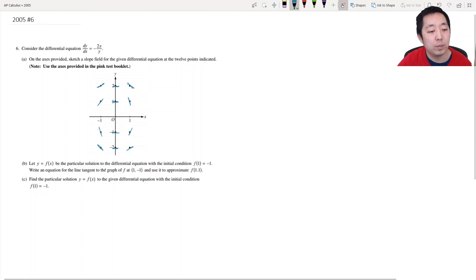Let y equals f of x be the particular solution to the differential equation with the initial condition. Write an equation for the line tangent to the graph and use it to approximate 1.1. Okay so tangent line I always use y minus y0 is equal to m times x minus x0. This is the slope point form.